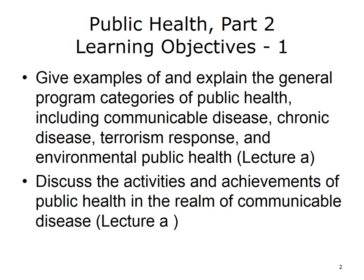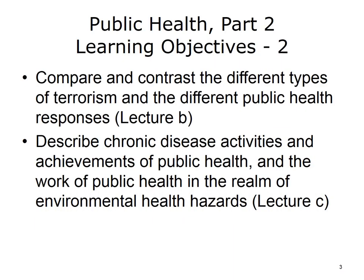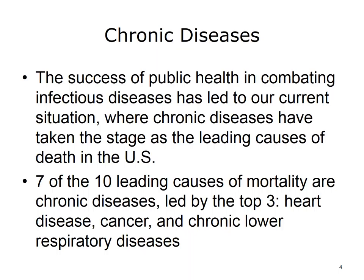The learning objectives for Public Health Part 2 are to give examples of and explain the general program categories of public health, including communicable disease, chronic disease, terrorism response, and environmental public health. Discuss the activities and achievements of public health in the realm of communicable disease, compare and contrast the different types of terrorism and the different public health responses, and describe chronic disease activities and achievements of public health and the work of public health in the realm of environmental health hazards.